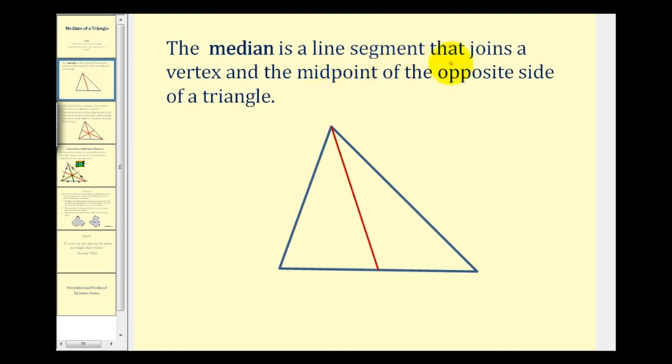The median is a line segment that joins a vertex and the midpoint of the opposite side. So here we see a median in red. And since this is the midpoint of the opposite side, we know that this segment is congruent to this segment.